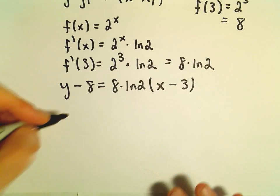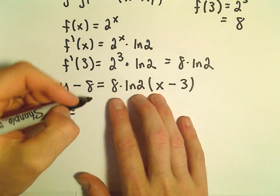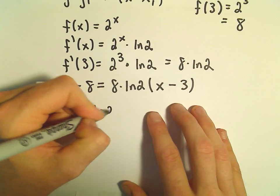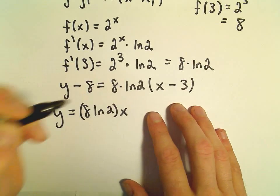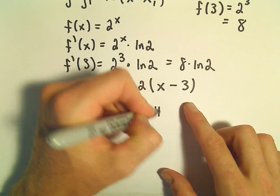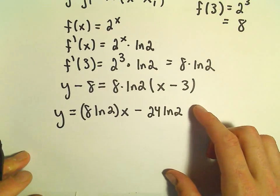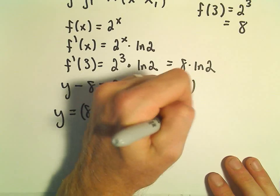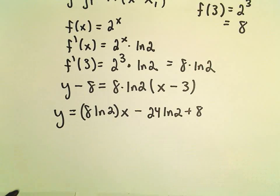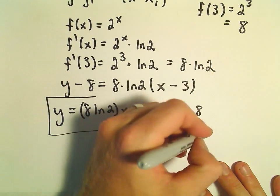This is going to be our linearization. If we distribute on the right side, we would have 8 times the natural logarithm of 2 times x, then a negative 24 times the natural logarithm of 2, and then we add positive 8. This is now our linearization.